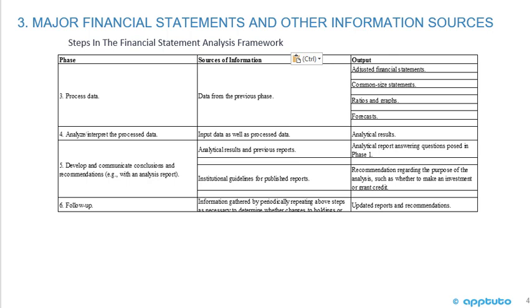Finally, step six in the Financial Statement Analysis Framework is the follow-up. The sources of information would be information gathered by periodically repeating the above steps, and the output would be updated reports and recommendations.